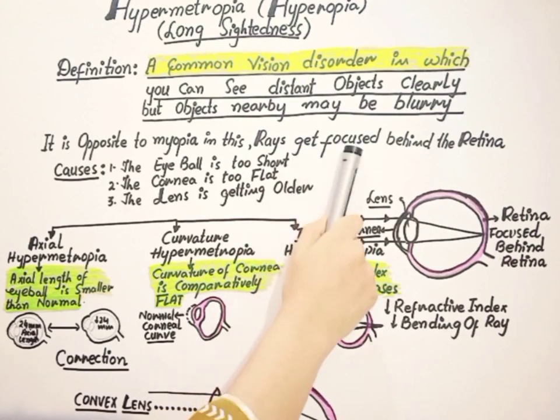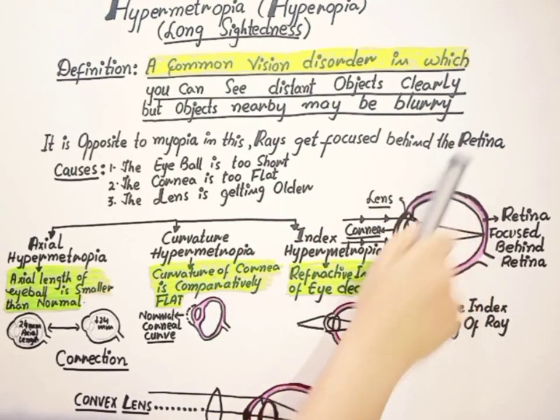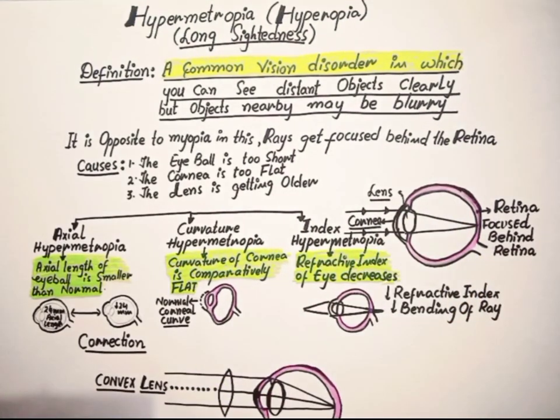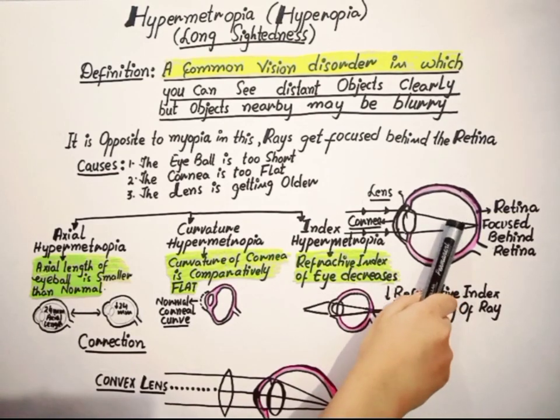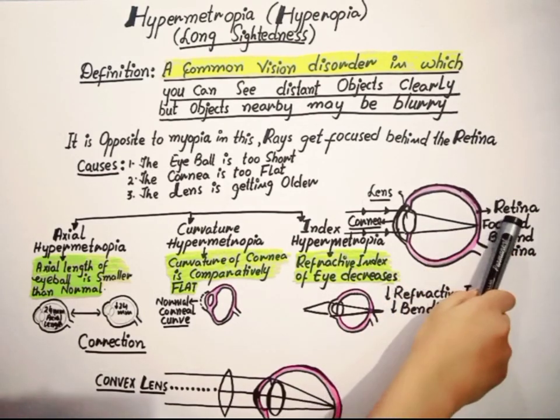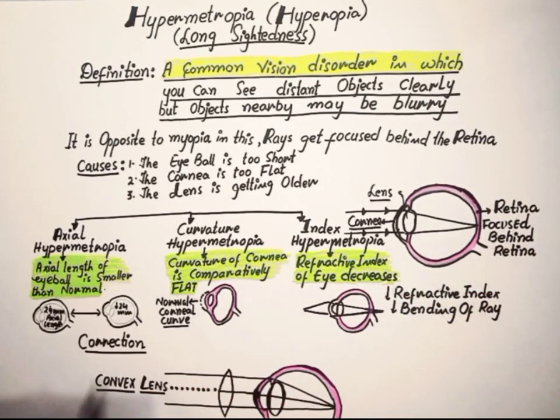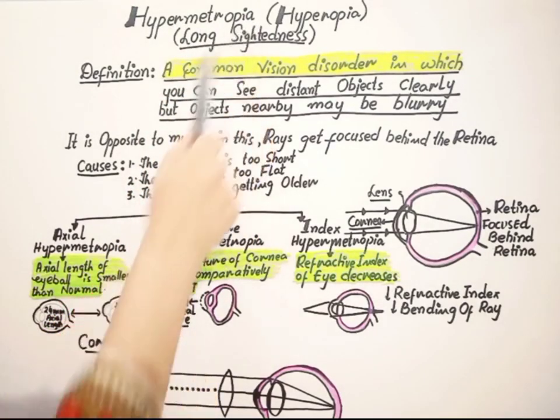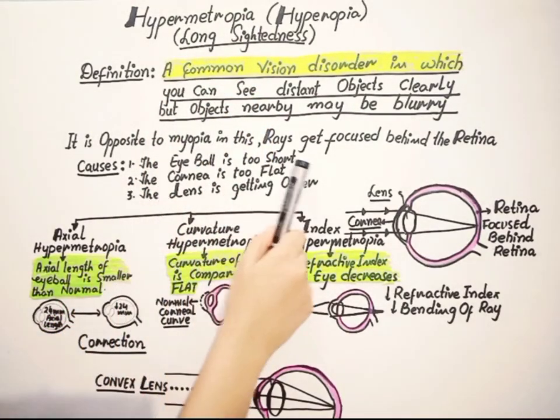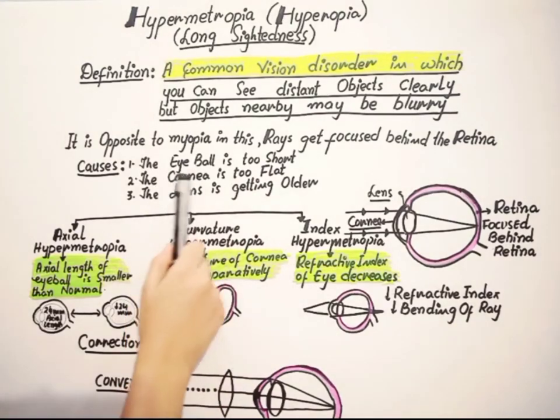This hypermetropia is totally opposite to myopia. In this, the rays get focused behind the retina, but in normal vision the image should be formed on the retina wall. So what are the causes behind this hypermetropia? The eyeball is too short, maybe the cornea is too flat, and the lens is getting older by the passage of time.